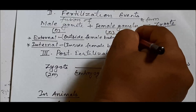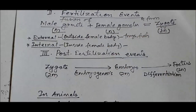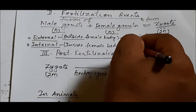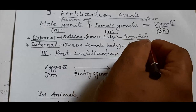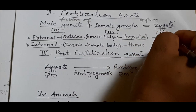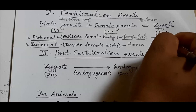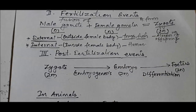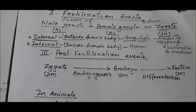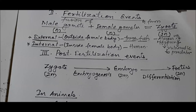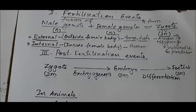Internal fertilization occurs inside the mother's body, as in placental mammals and human beings. Where there is external fertilization, like in frogs and fish, a large number of offspring are produced. This is because the offspring are vulnerable to predators in water, so producing more offspring compensates for the high rate of death.